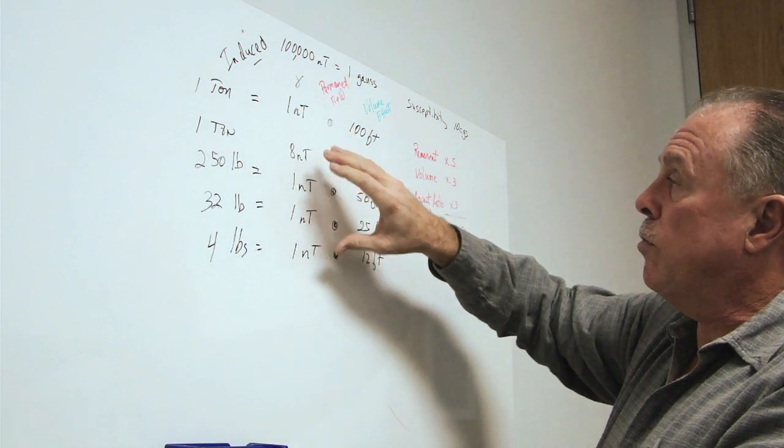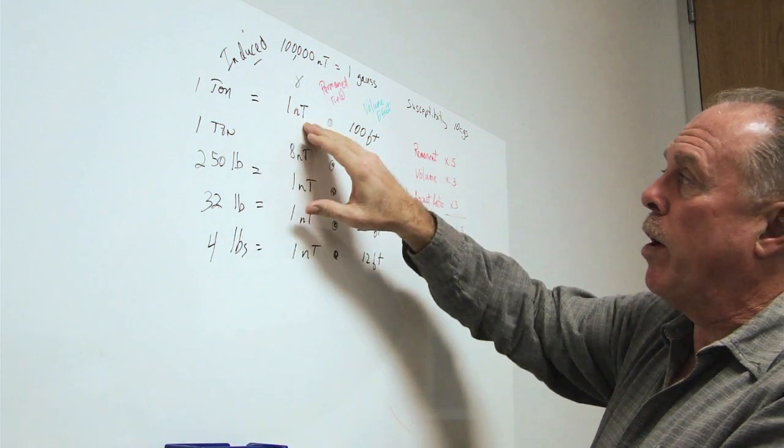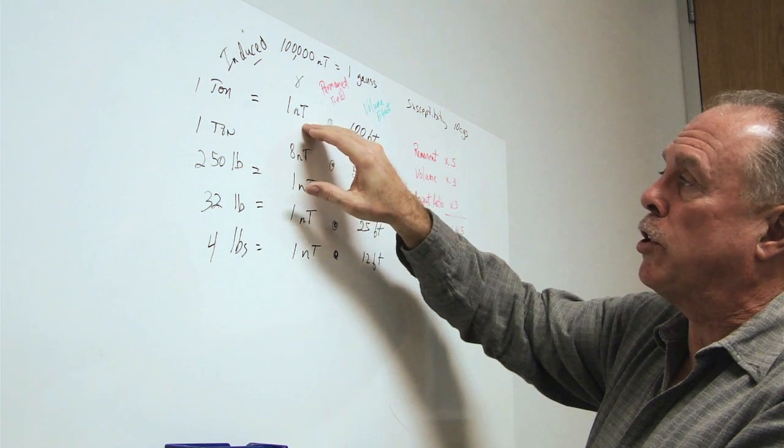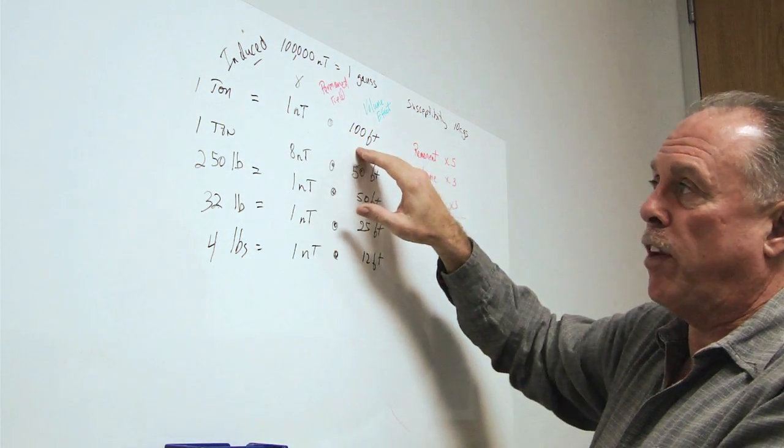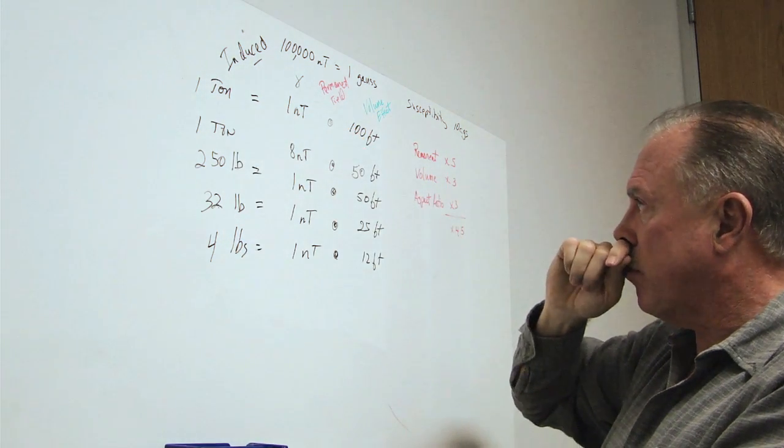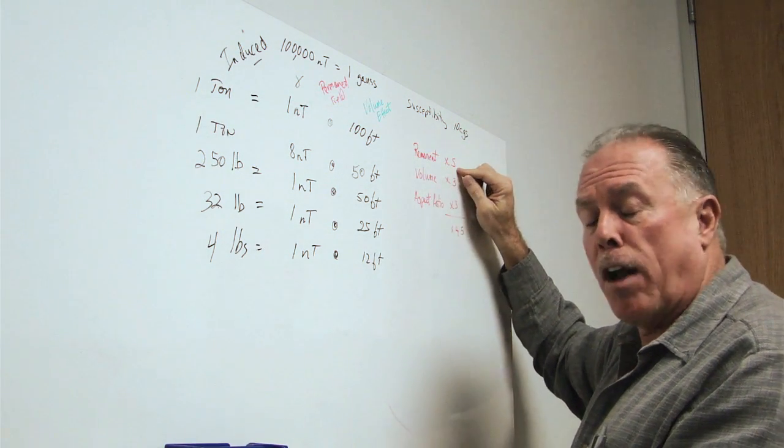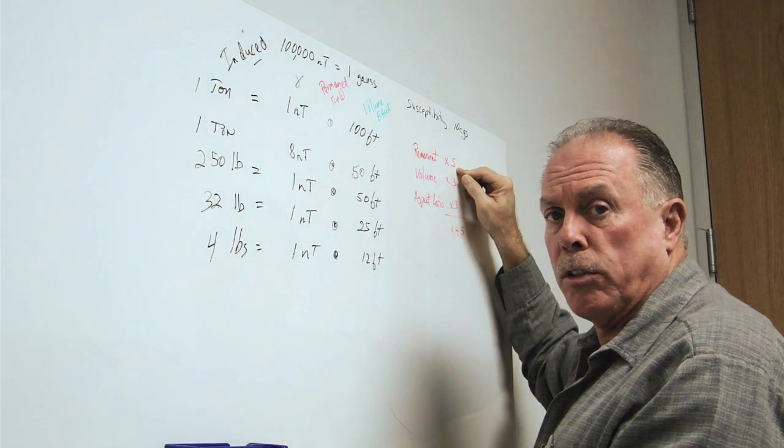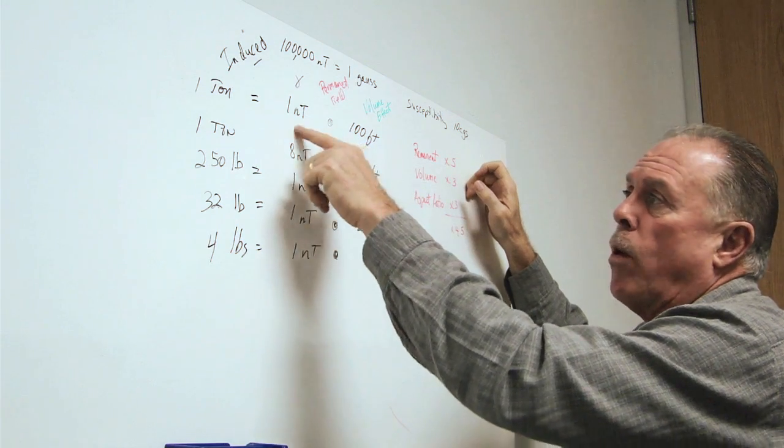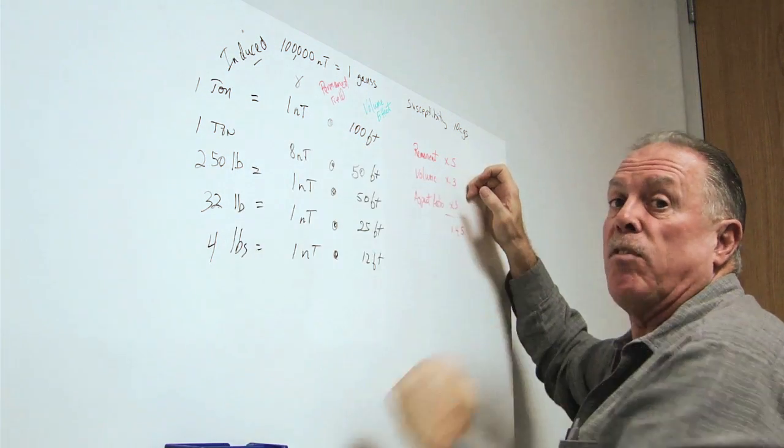The induced fields give us approximately one nanotesla of earth's distortion at 100 feet for one ton. We learned that remnant fields can give us as much as a five times increase in field distortion, meaning that instead of seeing one nanotesla at 100 feet, we might see five nanotesla.